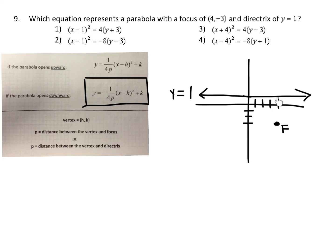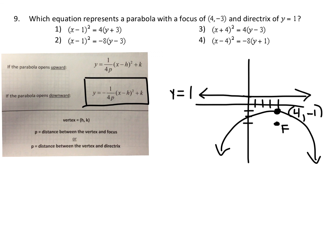Let's find the vertex. The directrix is at height 1 and the focus is at negative 3 — there are 4 units between them. Half of 4 is 2, so the vertex is 2 units up from the focus or 2 units down from the directrix. The vertex coordinates are (4, −1). The value p is the distance between the vertex and the focus, which equals 2. So 4 times p is 4 times 2, which is 8.